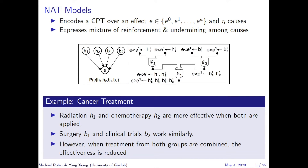A NAT model encodes a CPT over an effect and n causes, and expresses a mixture of reinforcement and undermining among the causes. Consider the example of cancer treatment: radiation and chemotherapy are more effective when both are applied, and similarly, surgery and clinical trials are more effective when both are applied. However, when the group of radiation and chemotherapy and the group of surgery and clinical trials are combined, their effectiveness is reduced. The NAT model encodes these causal interactions by combining two types of NAT gates. The top two are dual NAT gates modeling reinforcing interactions, while the bottom NAT gate is a direct NAT gate modeling undermining interactions. This reduces the NAT model to linear on the number of causes.